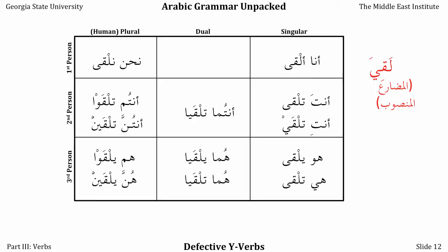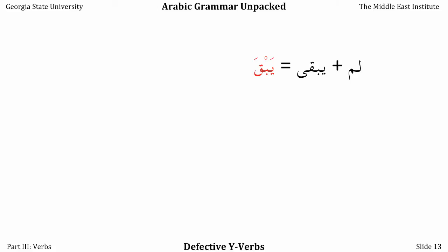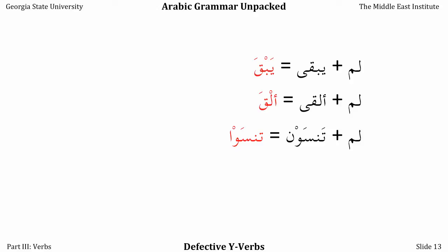Remember that when we use lam or any of the other particles that put a verb in the mudaari' majzoom — the third form of the present tense — we have this rule that causes long vowels to change into their corresponding short vowels sometimes. So lam yabqa ('he did not remain') becomes yabqa. Lam alqa ('I did not meet') becomes alqa. They lose their final alif maqsura, which in an unvoweled text is going to change their spelling entirely and probably confuse you unless you know the most important vocabulary words from this pattern. So lam tansa becomes tansa, and is a lot easier to recognize, although it still looks like it's missing its final letter. For the hum form, yabqaun becomes yabqaun — but it doesn't lose its last letter entirely like the first two examples do.